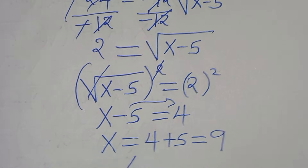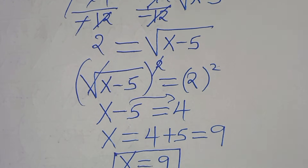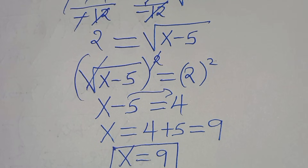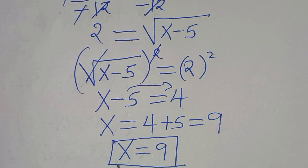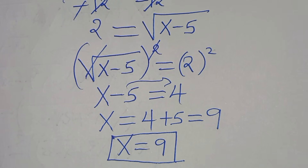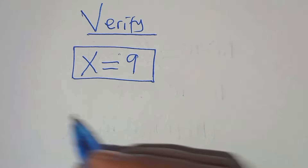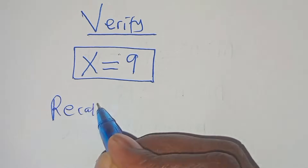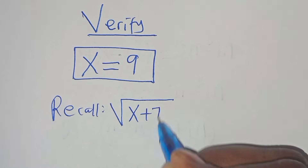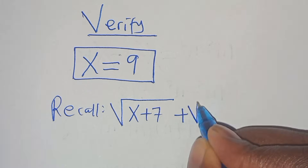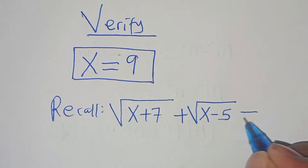So x equals 9 by applying Method 3. All three methods give the same value, x equals 9. Let's verify: substituting x equals 9 into the original equation, we need the square root of 9 plus 7, plus the square root of 9 minus 5, to equal 6.